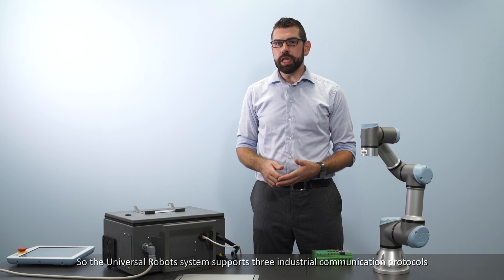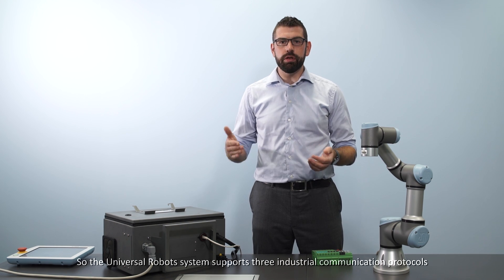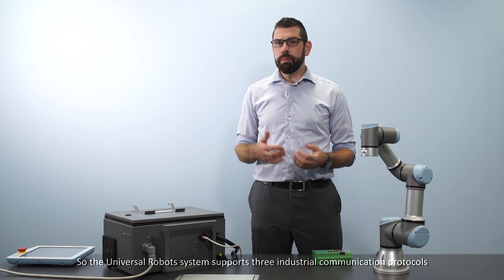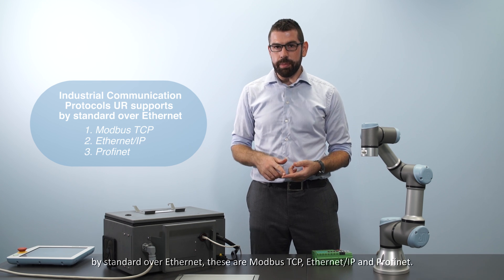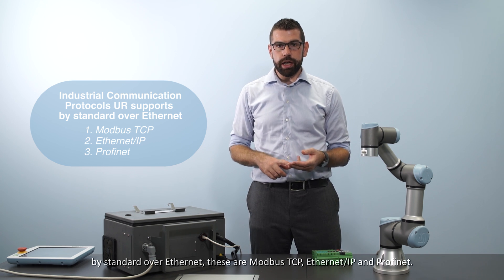The universal robot system supports three industrial communication protocols by standard over ethernet. These are Modbus TCP, Ethernet IP and ProfiNet.